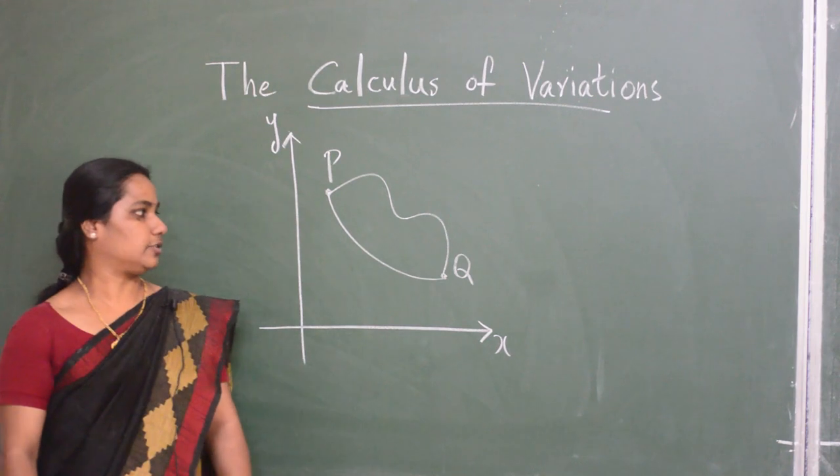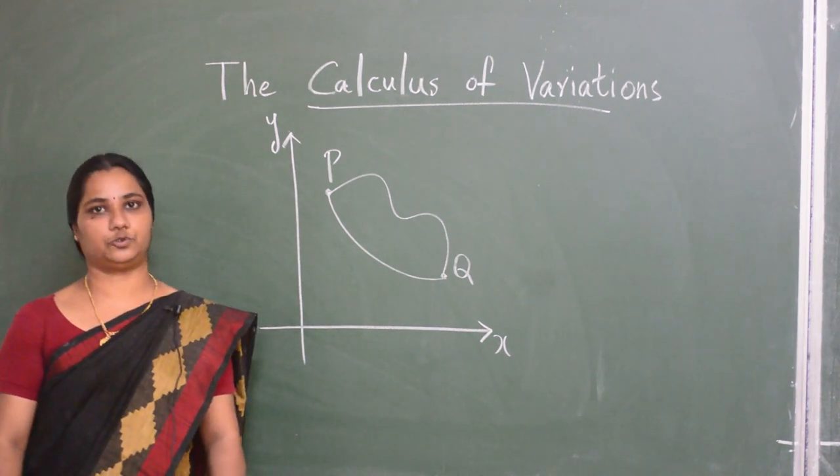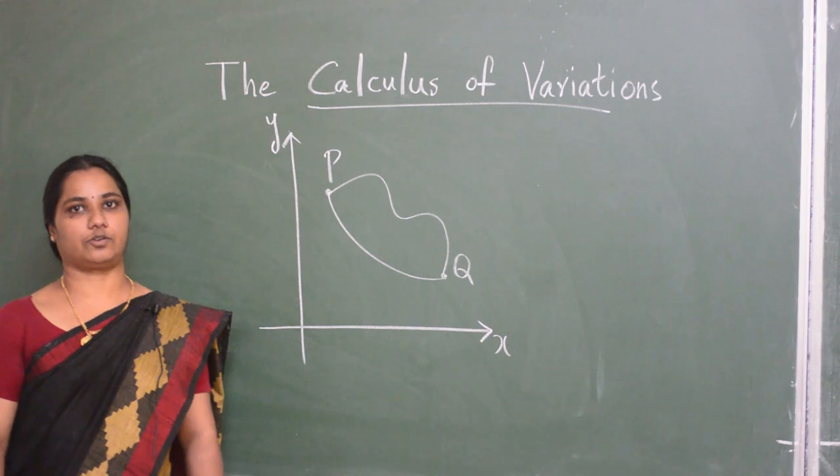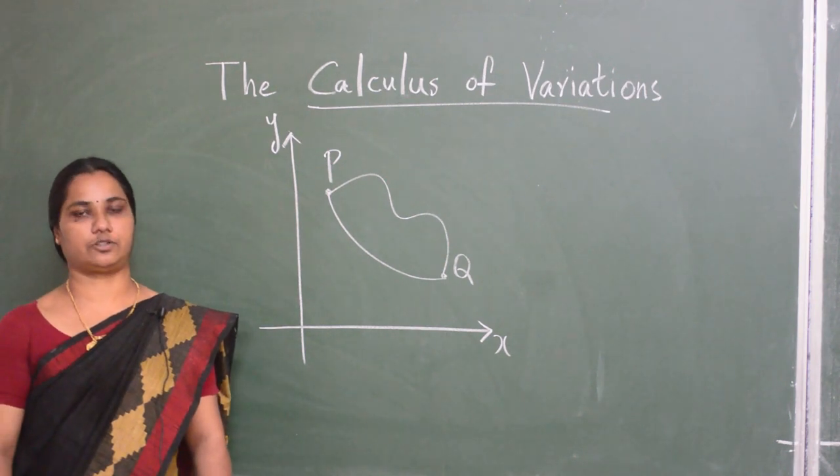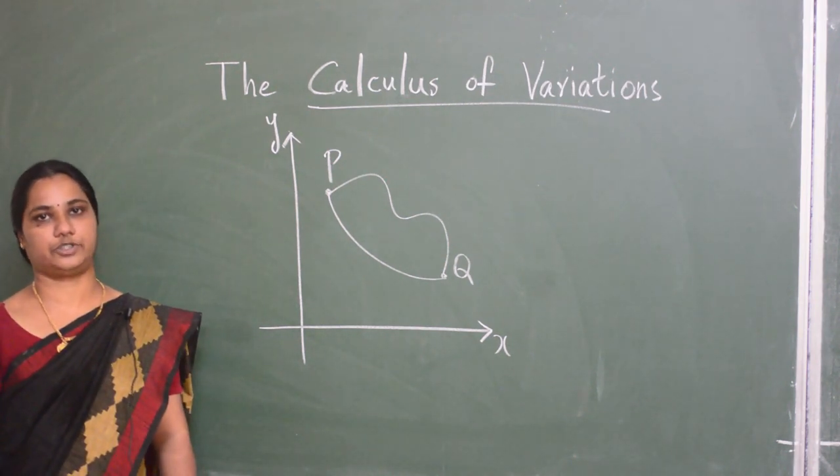The term brachistochrone is derived from two Greek words, brachistos and chronos. Brachistos which means shortest and chronos which means time.